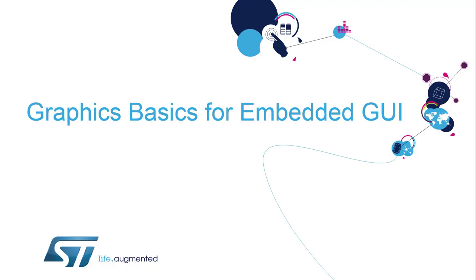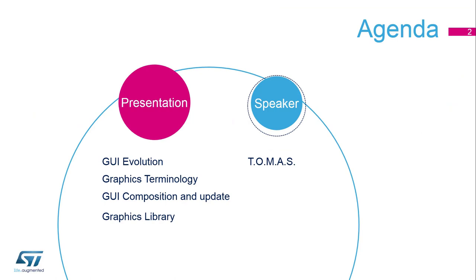Let's now put aside the STM32 family to focus on the graphical user interface aspects. First, we will see how the GUI evolution drives MCU evolution. Then, some basic graphics terms will be presented to set up a common language. We will also describe the many points to take care of when dealing with GUI management, such as memory or screen refresh, and get an idea of how graphics libraries can help.